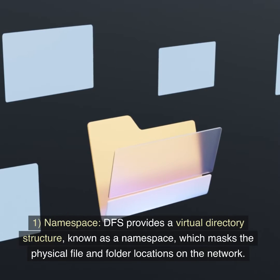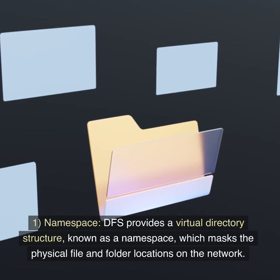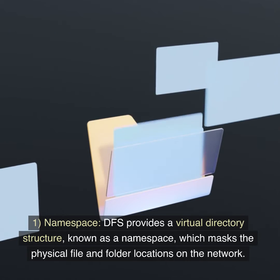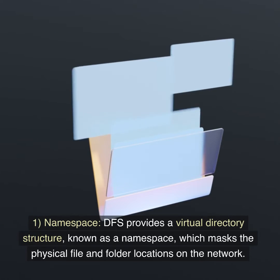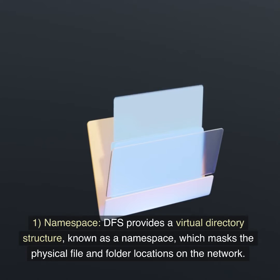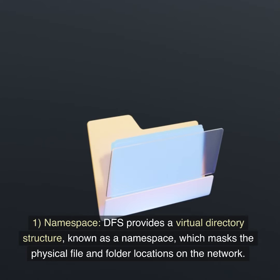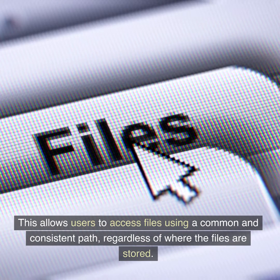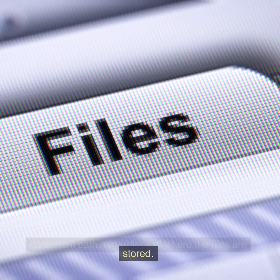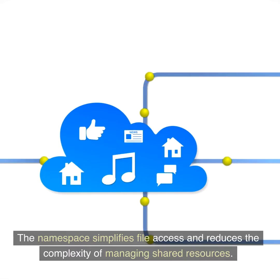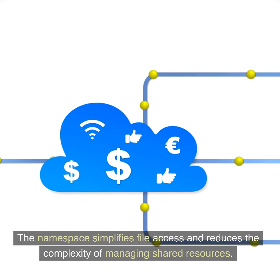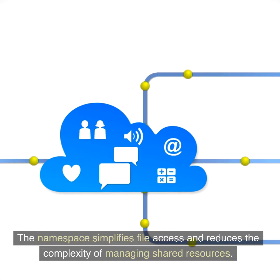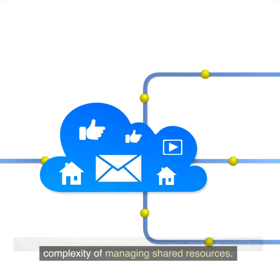1. Namespace. DFS provides a virtual directory structure, known as a namespace, which masks the physical file and folder locations on the network. This allows users to access files using a common and consistent path, regardless of where the files are stored. The namespace simplifies file access and reduces the complexity of managing shared resources.